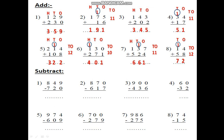Now I can complete the subtraction. Subtract means minus. 849 minus 720. Put the homes. 1s, 10s. Start from the ones. And 9 minus 0 is 9.